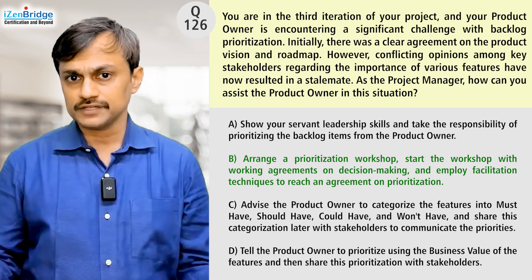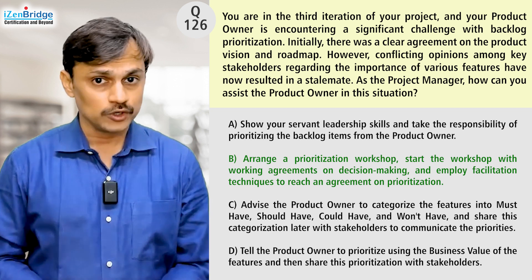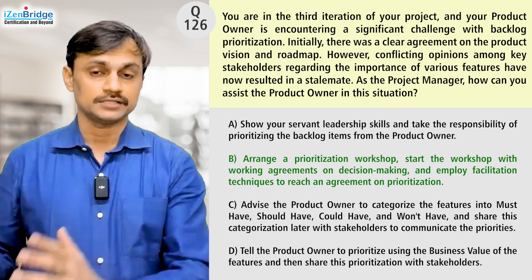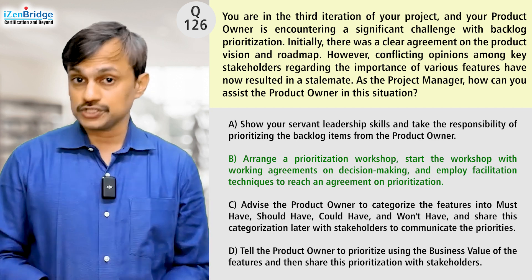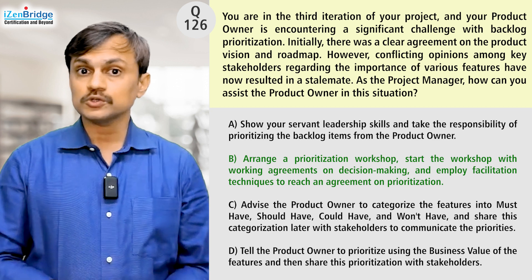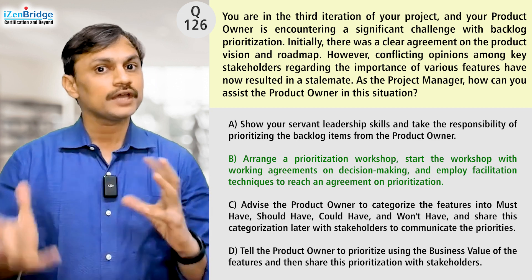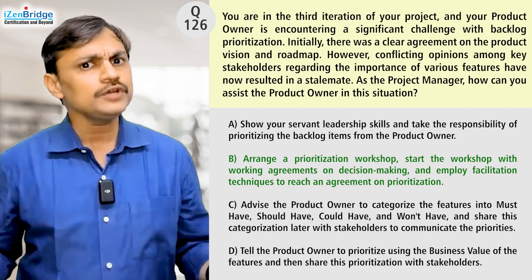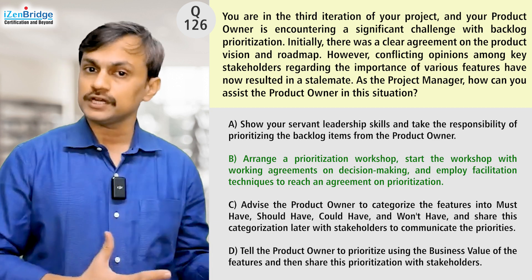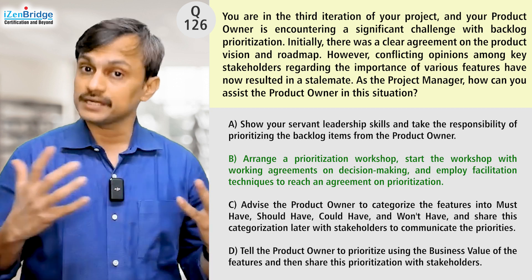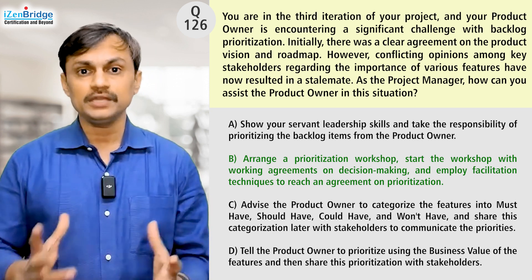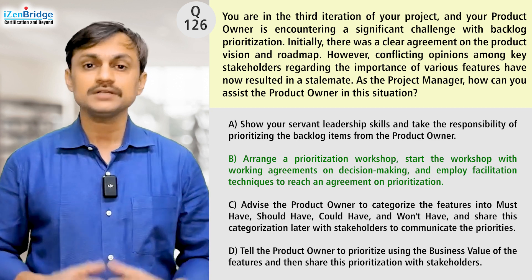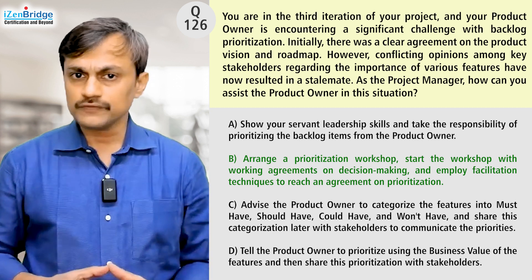As of now, we have these four options and we go with B because it clearly talks about you being there to facilitate, while other things can be taken care of by the stakeholders. Option B also talks about setting up the right working agreements so we don't get confused during prioritization — we can agree on what to do when we have differences, how to weigh options, and how to make decisions. So even when there are conflicting opinions, the ground rules set in the facilitation can help us move forward.